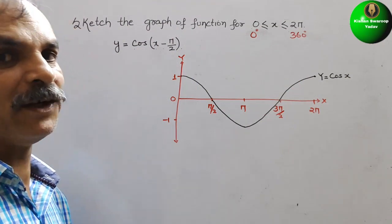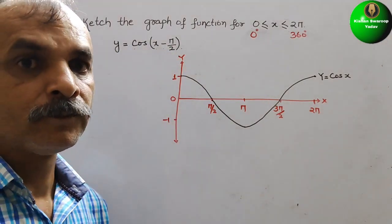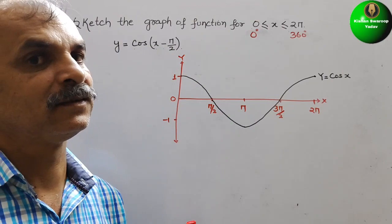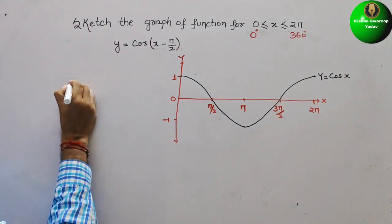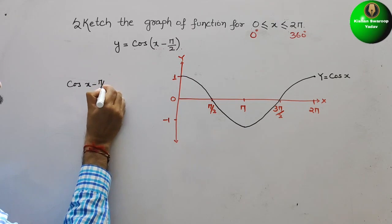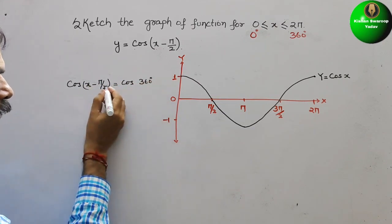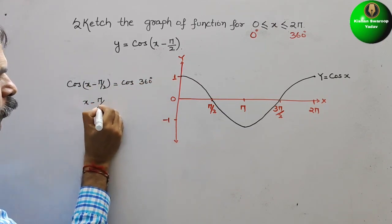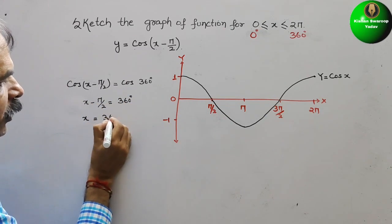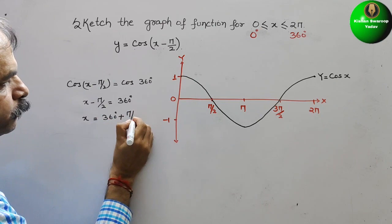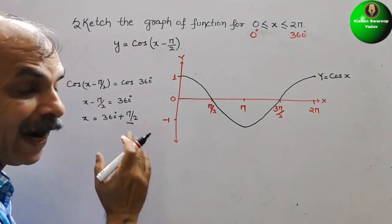Now they have given cos(x minus π/2). We know that one cycle of cos is 360 degrees, so we write cos(x minus π/2) equals cos(360°), which means x minus π/2 equals 360 degrees, and therefore x equals 360 degrees plus π/2. That means everywhere we have to add π/2.